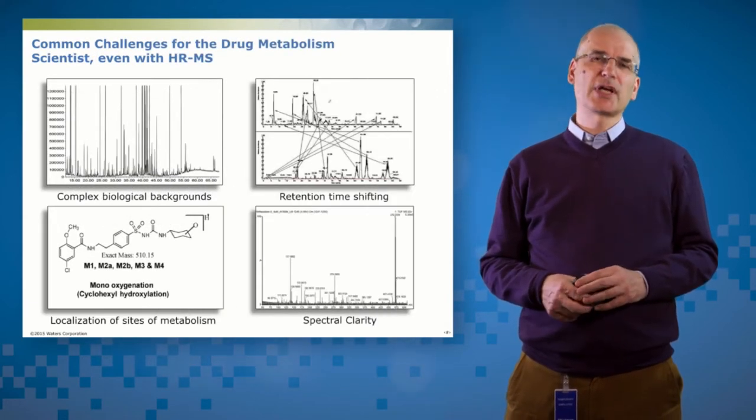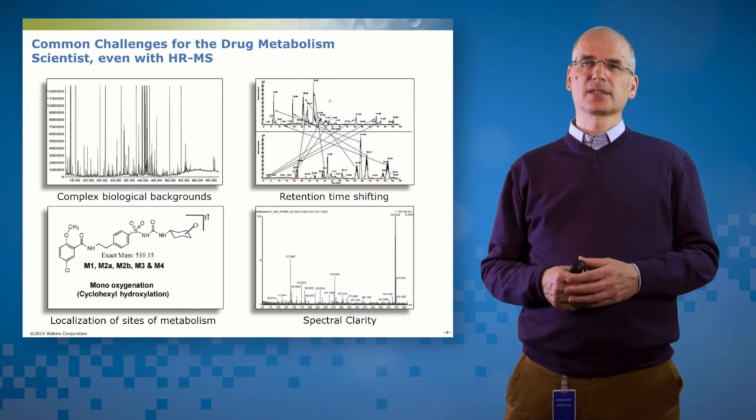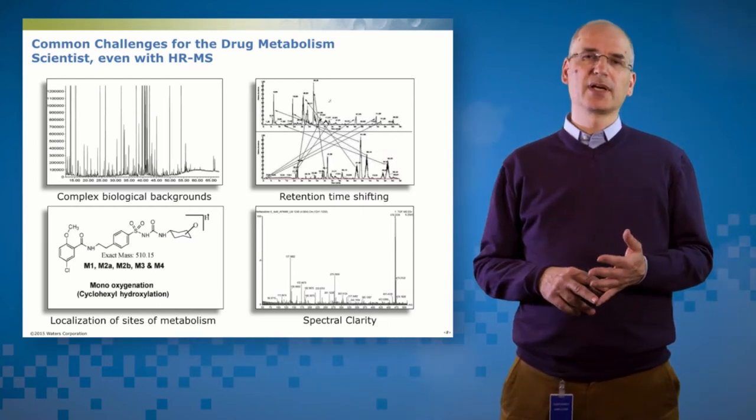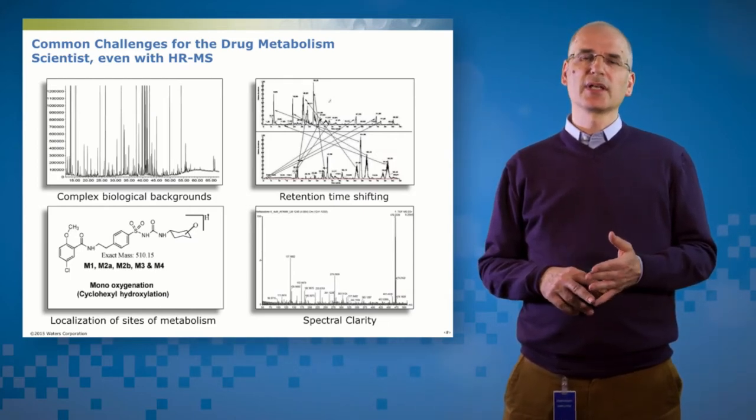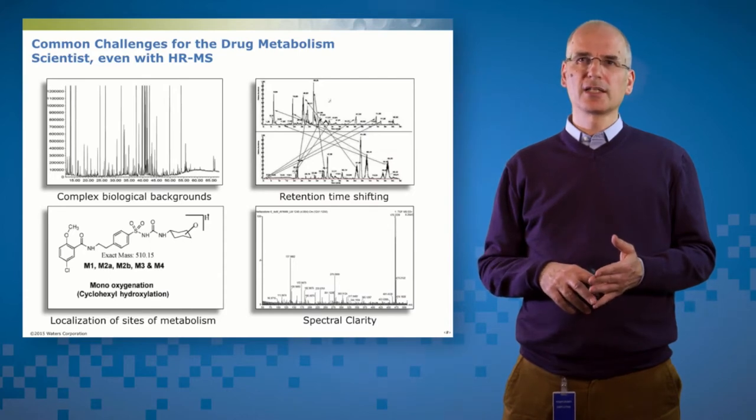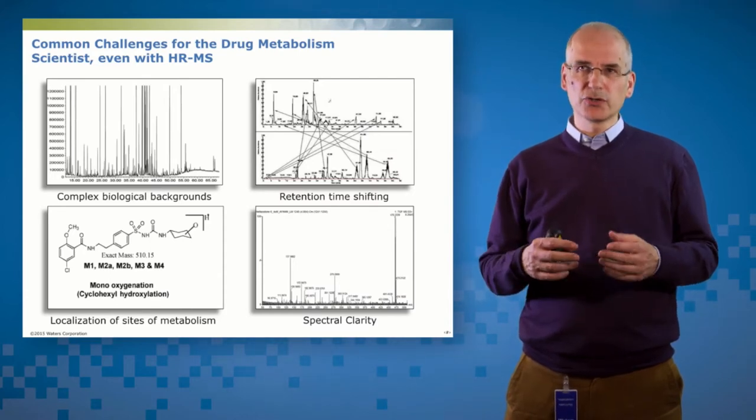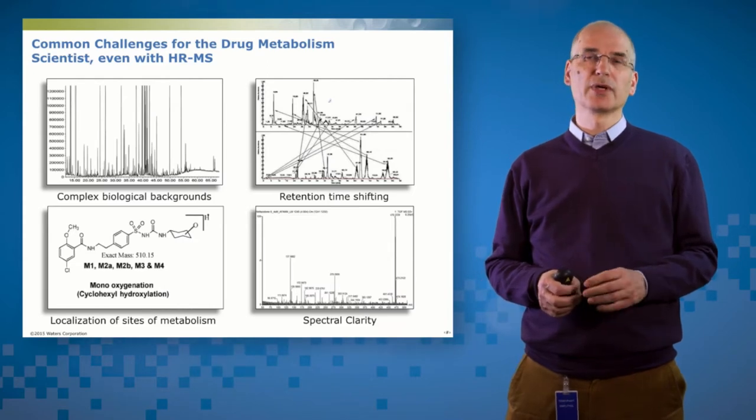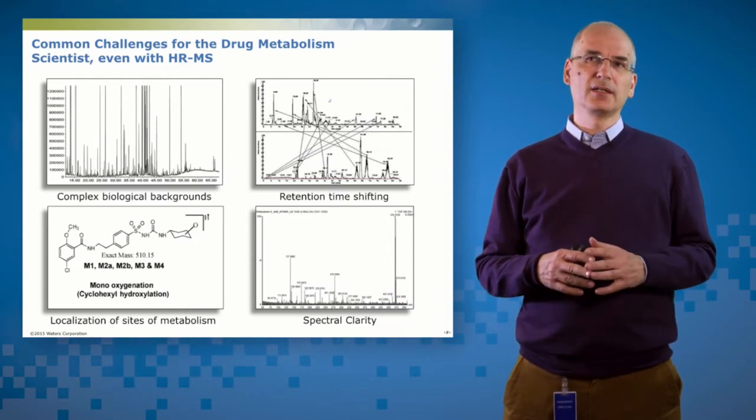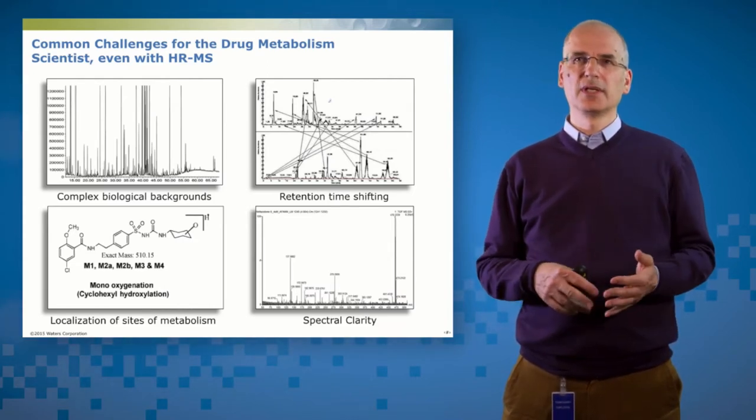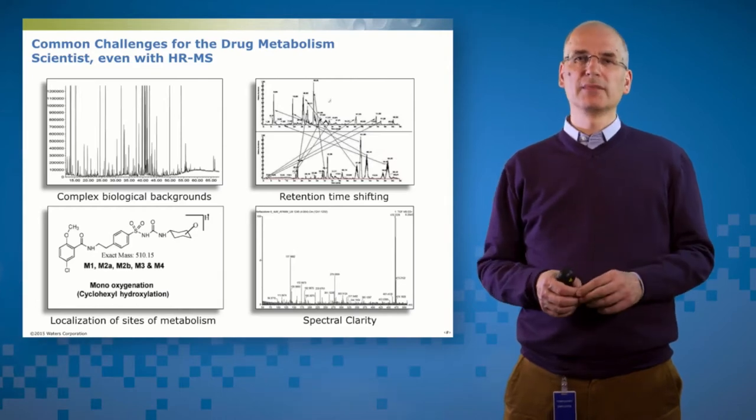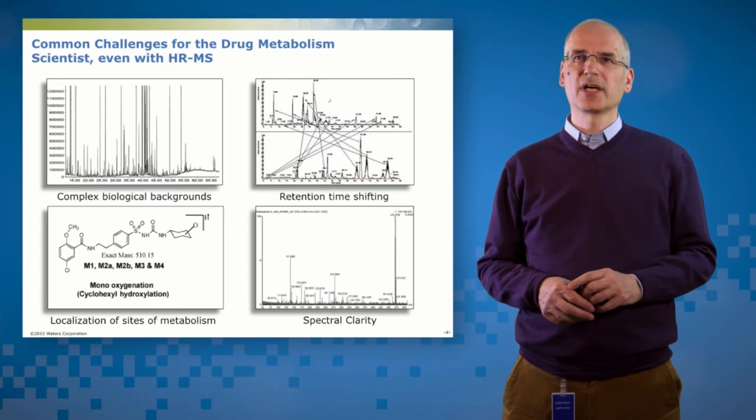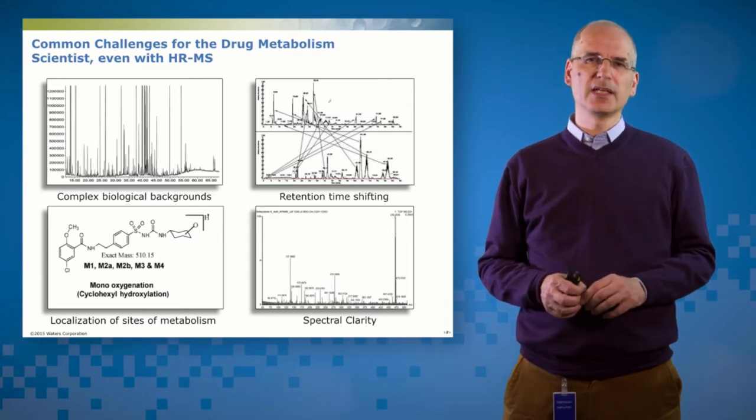Here are four common challenges that the DMPK scientist has. The first one is complex biological backgrounds and the challenge there is that we're looking for a whole variety of drug-related material, might be conjugates or simple oxidations or breakdown products in the forest of peaks which can come from bile or urine or matrix background or formulation. So we have the challenge of how do we find the signal in the noise? How do we find the needle in the haystack?